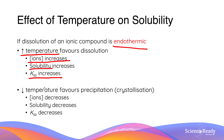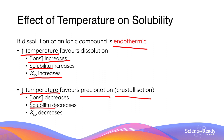Vice versa, if the temperature decreases, the reverse reaction — that is crystallisation, or precipitation — is favoured. As a result, ion concentrations and solubility decrease, and therefore the Ksp value also decreases.